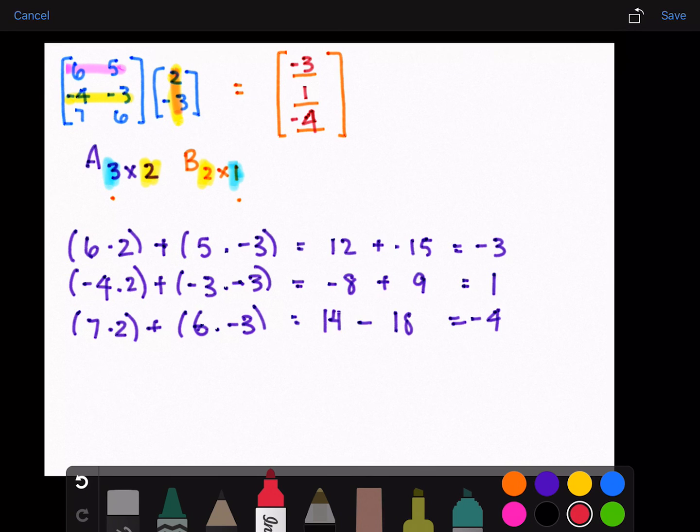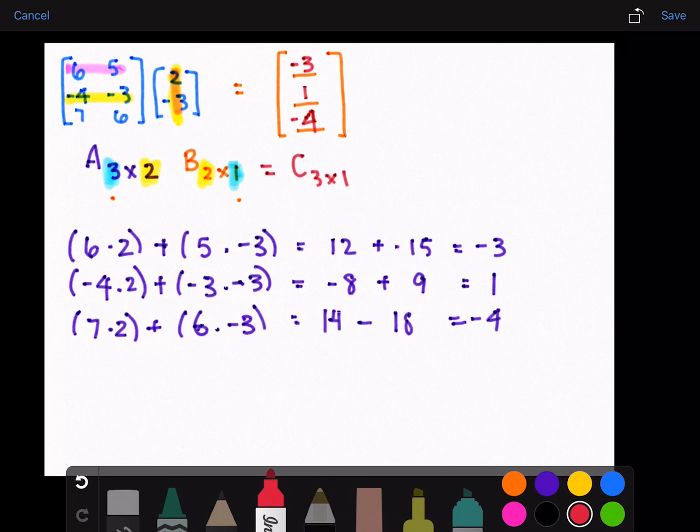So A times B equals matrix C with three rows, one column, and is that.